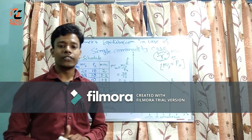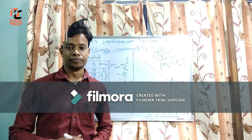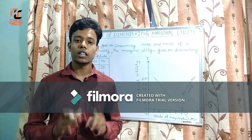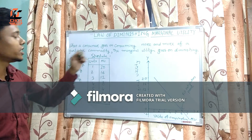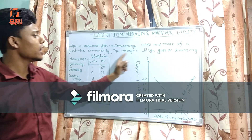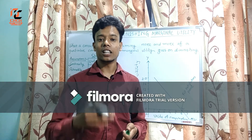Now let's start the next concept: the Law of Diminishing Marginal Utility. When a consumer goes on consuming more and more of a particular commodity, the marginal utility goes on diminishing. For example, if you are drinking Coca-Cola or Pepsi, the first unit gives you the highest level of satisfaction. By consuming the same commodity further, you get less satisfaction or less utility than before.